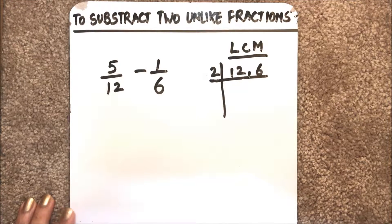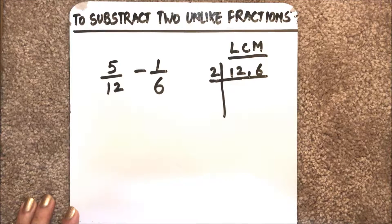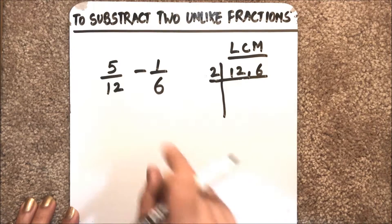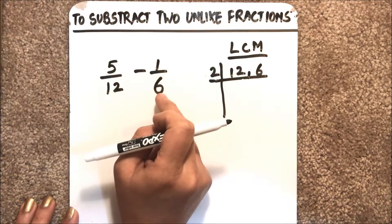Hello viewers, today I am going to tell you how to subtract two unlike fractions. Unlike fractions are fractions having different denominators. Here we have two unlike fractions: 5 over 12 and 1 over 6.